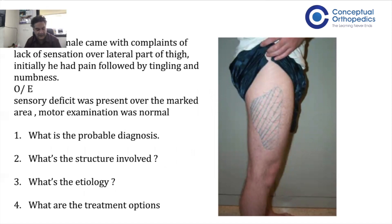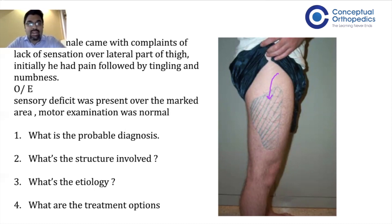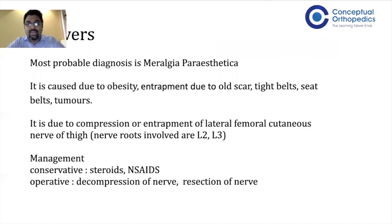The third question: a 30-year-old male presented with lack of sensation over the lateral part of the thigh, with pain followed by tingling and numbness. On examination, sensory loss was present over the marked area; motor examination was normal. The shaded area on the lateral aspect of the thigh is a classical presentation — this is a very common question in DNB exams. The key pointer is only sensory involvement. The area involved is supplied by the lateral cutaneous nerve of the thigh, so the diagnosis is meralgia paraesthetica.